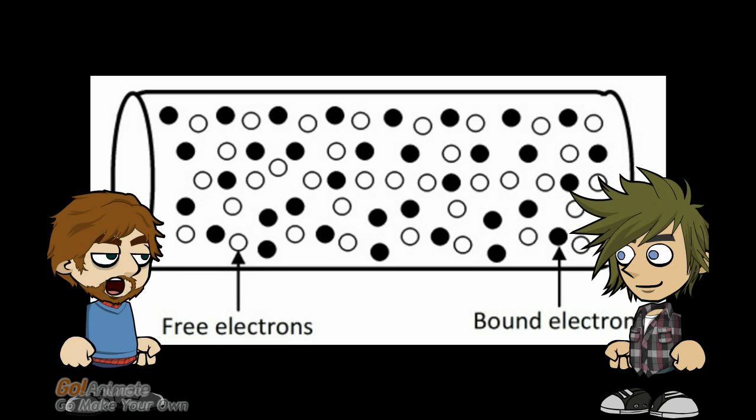Now suppose we turn on an electric field inside the wire by connecting it to a battery. Here's what it might look like. If the electric field points this way, I must be at the high voltage end of the wire. You are. And I'm at the low voltage end.